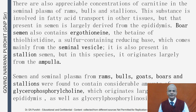Appreciable concentrations of carnitine are present in seminal plasma of rams, bulls, and stallions, largely derived from the epididymis. Boar semen also contains ergothionine — the betaine of thiohistidine, a sulfur-containing reducing base — mainly from the seminal vesicle, also present in stallion semen where it originates largely from the ampulla. Semen from rams, bulls, goats, boars, and stallions contains glycerophosphorylcholine and glyceryl phosphoryl inositol, largely from the epididymis.